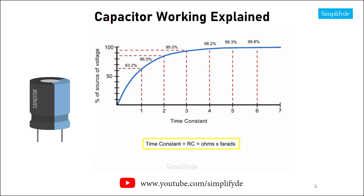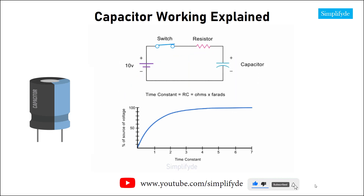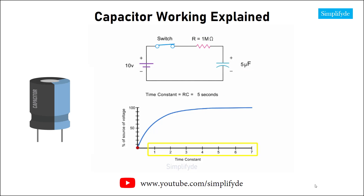A time constant in seconds is equal to the resistance of the circuit in ohms multiplied by the value of the capacitance in farads. For example, in this circuit, if you have a one mega ohm resistor and a five microfarad capacitor, the time constant would be five seconds. Therefore, for each five seconds of elapsed time the capacitor will achieve its corresponding voltage percentage until it reaches an effective charge after five time constants.